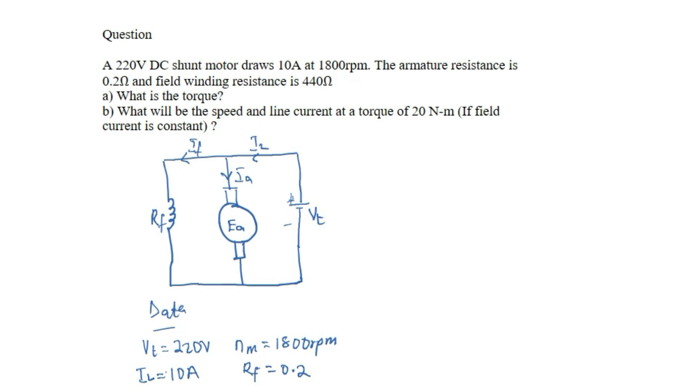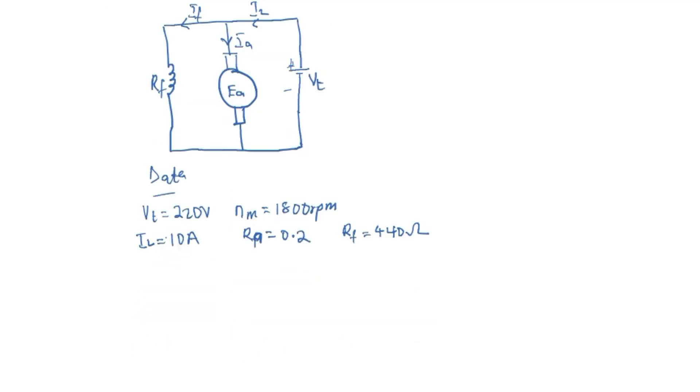Pardon, this is armature resistance and the field winding resistance is 440 ohms. So we are asked to find the torque. Now based on this you know the equation of the torque to be P over omega, while omega is the speed in rad per second. So the power of the motor is EA times IA.